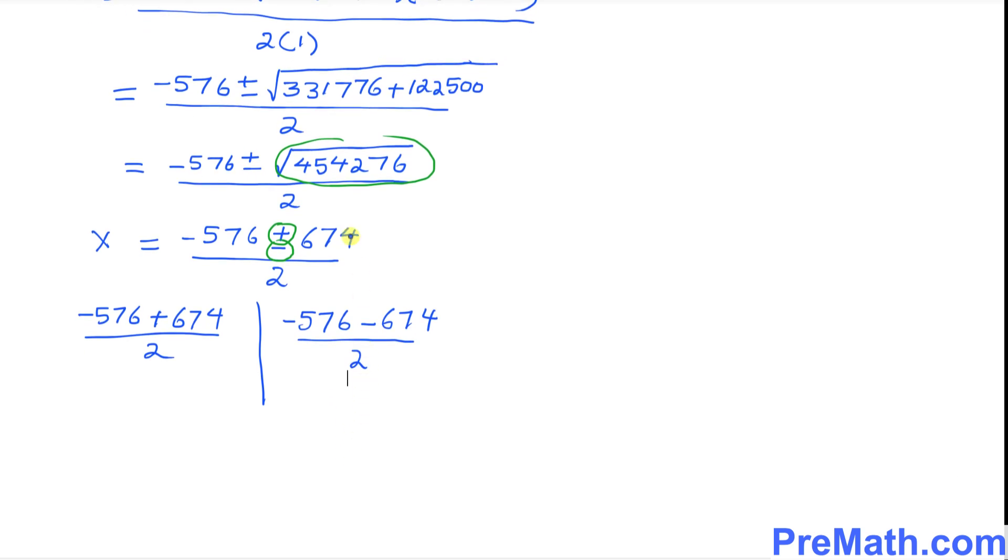Let's simplify some more. So this on the top is going to give you, if you subtract this, it's going to give you 98 divided by 2. That means x turns out to be 49 is one of your solutions.